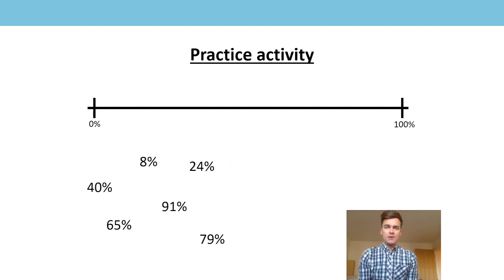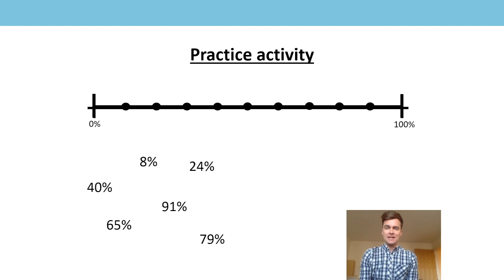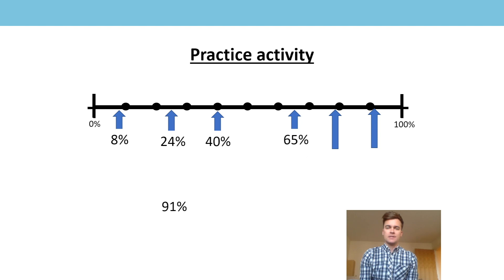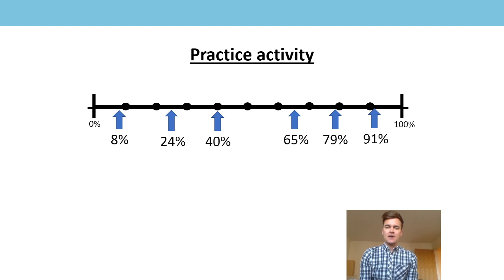To help me estimate the location of the percentages, I divided my number line into 10 equal parts, with each equal part representing 10%. That gave me more confidence to plot the location of the percentages, which I have marked with 8%, 24%, 40%, 65%, 79%, and 91%. I did challenge myself and represented those percentages with their decimal and fraction equivalents.